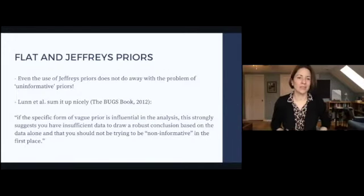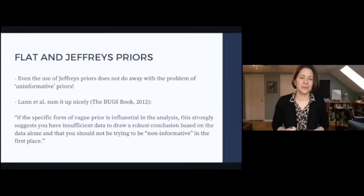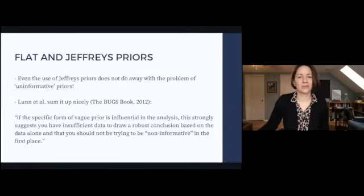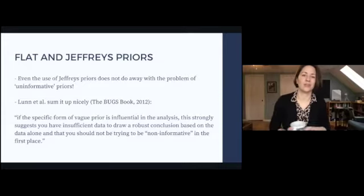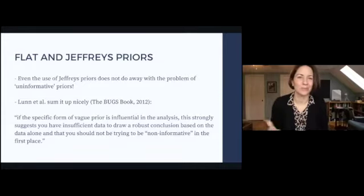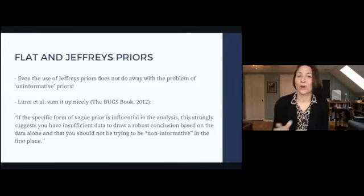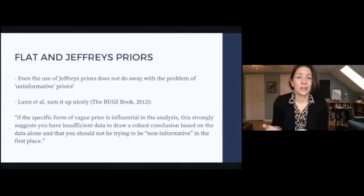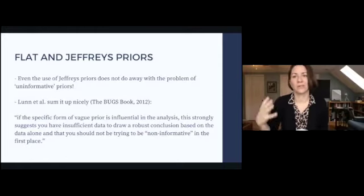It's important to note that even the use of Jeffreys priors doesn't do away altogether with the problem of uninformative priors in inference. From the Bugs Book on Bayesian inference: 'If the specific form of vague prior you're using is influential in the analysis, this strongly suggests you have insufficient data to draw a robust conclusion based on the data alone, and you shouldn't be trying to be non-informative in the first place.' Sometimes you need to go deeper and look at the statistical model, the physical model, and the more robust elements of the inference.